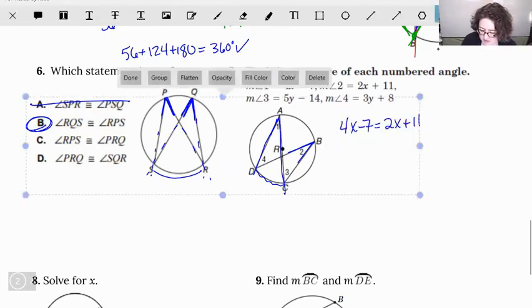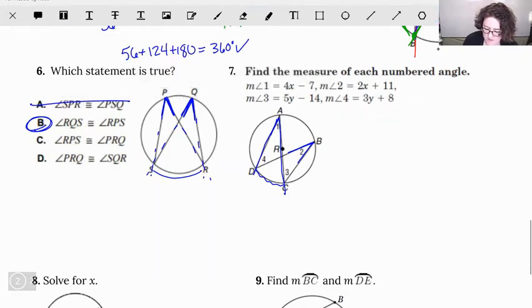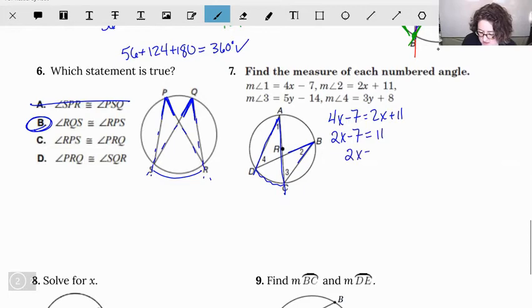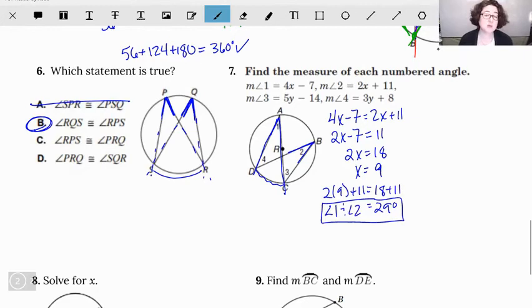Let me go ahead and move this over a little bit so I have enough room. We have 4x minus 7 and 2x plus 11. Subtract 2x from both sides, so 2x minus 7 equals 11, and add 7 to both sides. So 2x equals 18, which means x equals 9. That means to plug that back in is going to give us both measures angle one and two. Let's plug it back into the 2x plus 11. So 2 times 9 plus 11 is going to give me 18 plus 11, otherwise known as 29 degrees. That's going to be both angle one and angle two, both equal that same measure because they were equal.